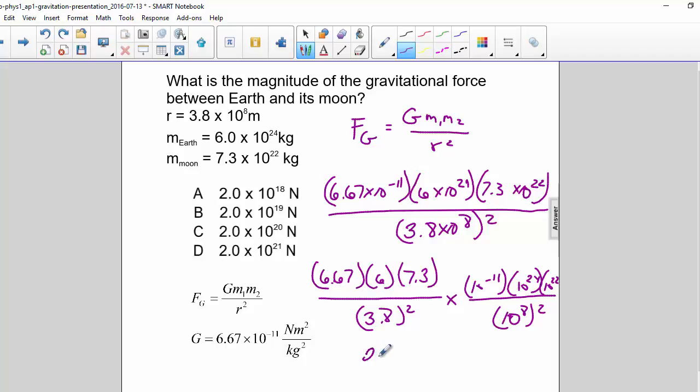So here we get 20.2, then times 10 to the 19th. So that gives us 2.02 times 10 to the 20th newtons. And our correct answer is C.